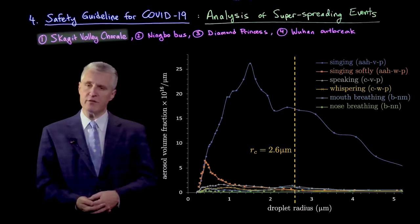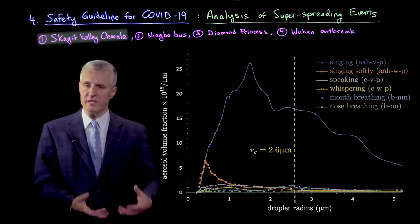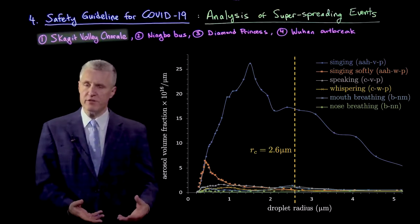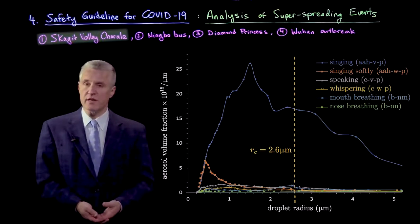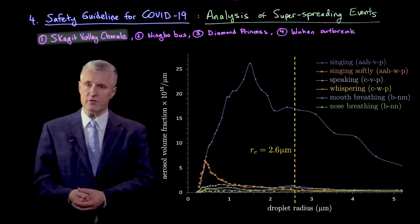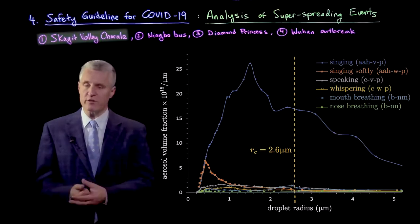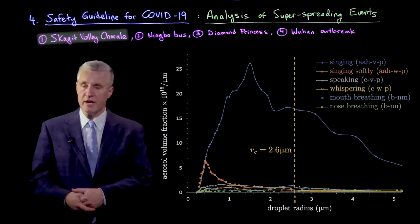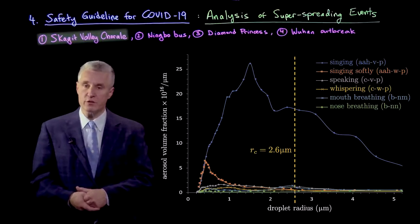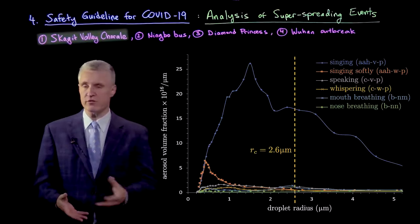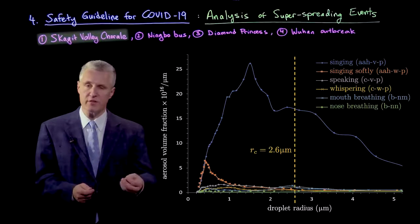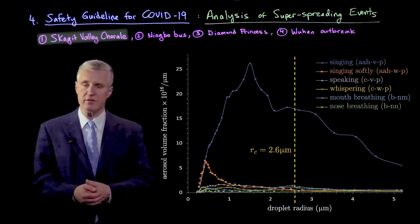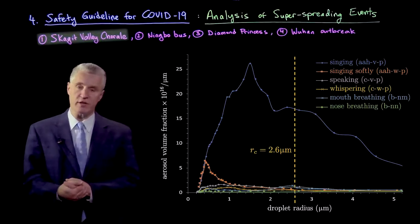It's important that we take those droplet distributions and evolve them in the Skagit Valley Choir space, so that we can figure out which of those droplets survived and would be in the air, and would be corresponding to the airborne transmission and can be compared with the actual spreading events that occurred using the Wells-Riley model. This is a short amount of time—we're going to assume there was no delay caused by incubation, but rather people were getting infected but not passing it on to anybody else. So we will use the Wells-Riley model.